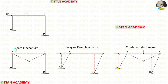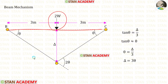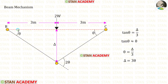First, let us look at the beam mechanism. In this mechanism, we will have plastic hinges at joints B and C. The third plastic hinge will occur under the point load. Since the point load is acting at the center of beam BC, we will have a symmetrical triangle, so the angles at points B and C will be the same. Let us keep these angles as theta, so the angle at the center will be theta plus theta, giving us 2 theta.